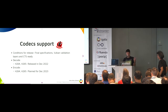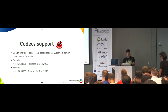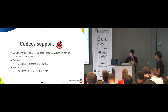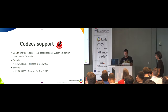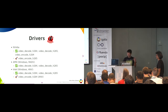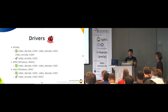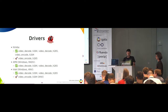Regarding codec support: H.264 and H.265 decoders were released in December 2022. H.264 and H.265 encoders are going to be released by end of year — we have a good chance. Conditions for release include a final specification, Vulkan validation layer, and CTS readiness — CTS meaning the Conformance Test Suite. For drivers, we have good driver support on AMD, Nvidia, and Intel. Nvidia has support on both Linux and Windows. There is nothing yet for macOS, though Molten VK could potentially support it, but it is not in the pipeline right now.